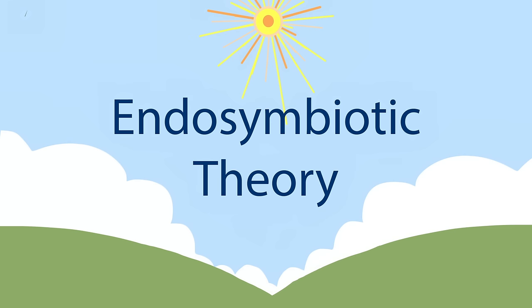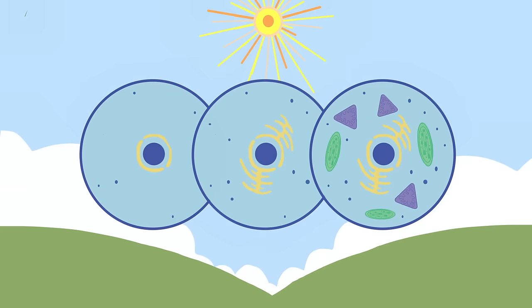This little story highlights what biologists call the endosymbiotic theory, the current best explanation of how complex cells evolved. There's a lot of evidence that supports this theory, but let's look at three main pieces.